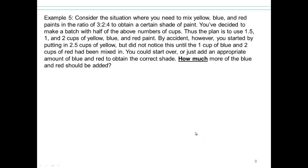Try that one on your own. So you have a situation where you need to mix yellow, blue, and red paints in the ratio of 3 to 2 to 4 to obtain a certain shade of paint. You've decided to make a batch with half of the numbers above. So half of 3 would be 1.5, half of that would be 1, half of that would be 2. So one and a half cups to one cup to two cups of yellow, blue, and red paint accordingly. Now by accident, you started by putting in two and a half cups of yellow and did not realize this until the one cup of blue and two cups of red had been mixed in. Should you start over or just add appropriate amount of blue and red so that you have the correct shade? So how much more blue and red should we add? That's the question. So go ahead and do that on your own. Pause the video.